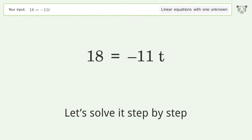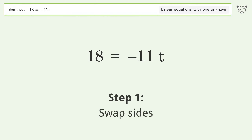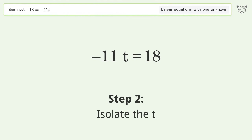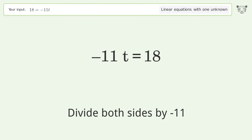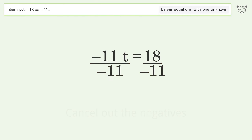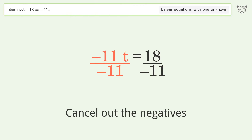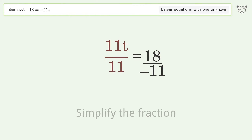Let's solve it step by step. Swap sides, then isolate t by dividing both sides by negative 11. Cancel out the negatives and simplify the fraction.